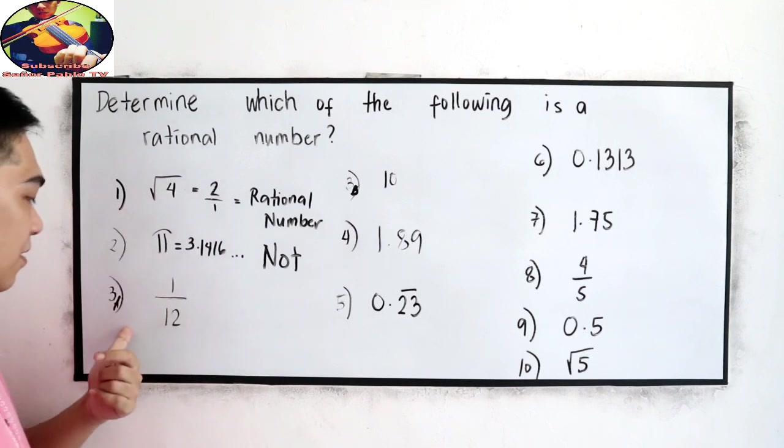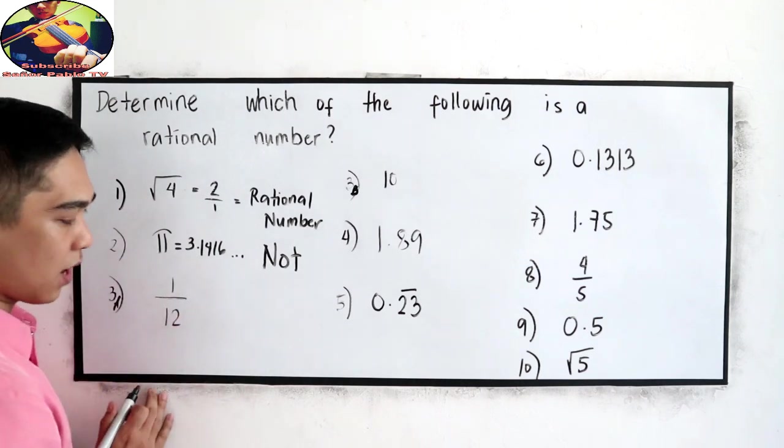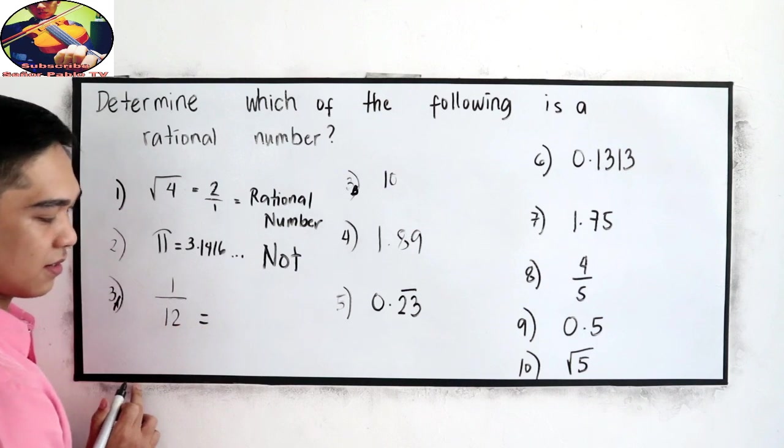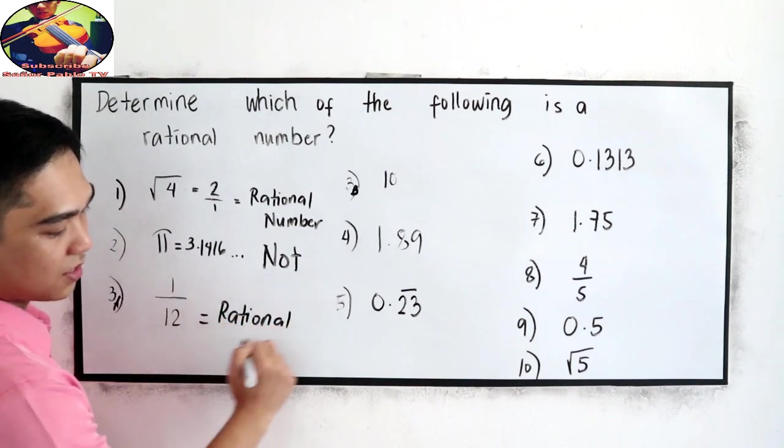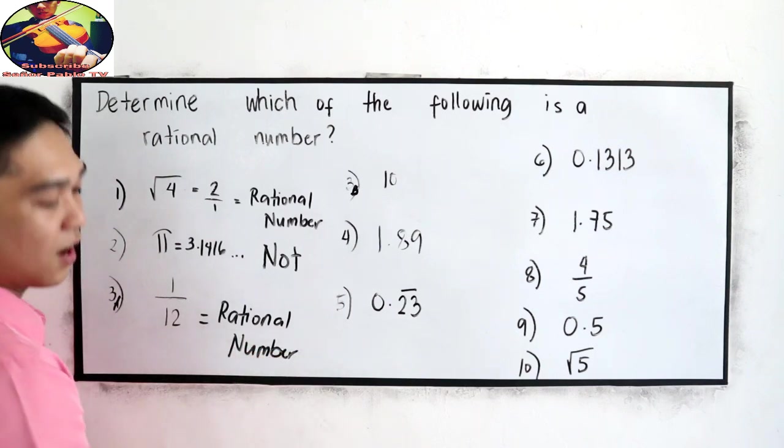And 3a, 1 over 12. This is a rational number.